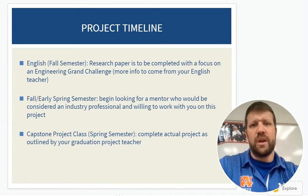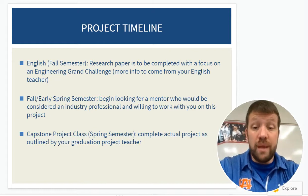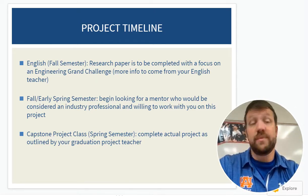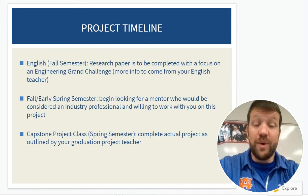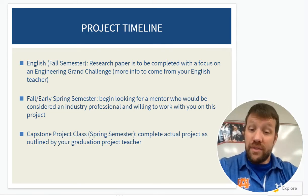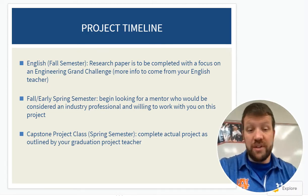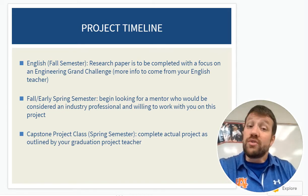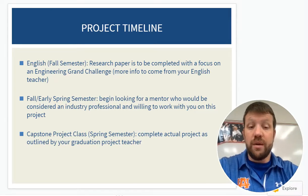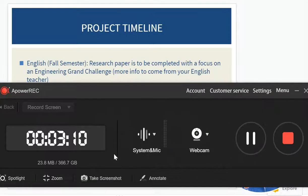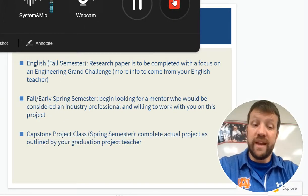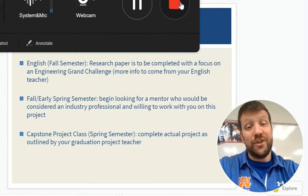The timeline — and this is really what I want to hit right now — is that right now you're writing your research paper focusing on one of the Grand Engineering Challenges, and your English teachers will help you through that. Then going into the early spring semester is when we'll start looking for a mentor. If you know someone now and want to reach out, by all means go for it. In the capstone project class is where you will actually build a product. Hopefully that gives you a quick intro, and I'm looking forward to seeing you in the spring.